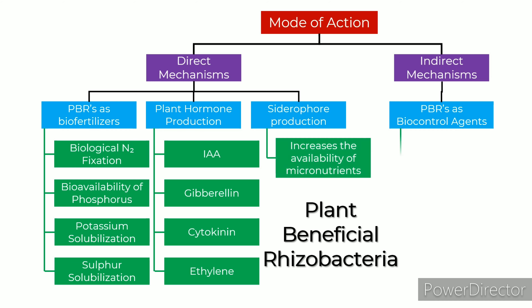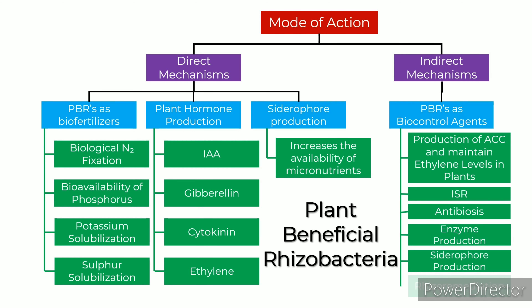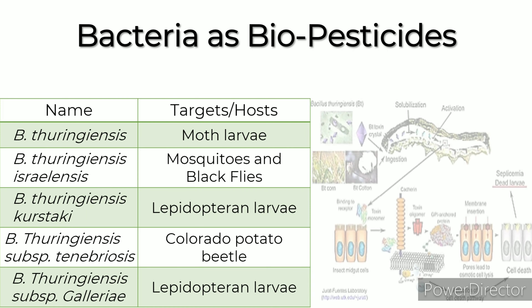Uses of bacteria include increasing the bioavailability of phosphorus, potassium solubilization, and sulfur solubilization. When used in plant hormone production, they produce IAA, gibberellin, cytokinin, and ethylene. In indirect mechanisms, they are used as biocontrol agents, produce ACC and maintain ethylene levels in plants, and contribute to ISR, antibiosis, enzyme production, and rhizoremediation.